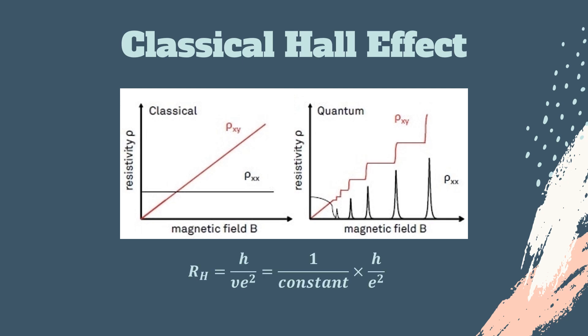The Hall resistance of the quantum Hall effect is H over Ne squared. As you can see here, the Hall resistance is quantized in units of H over E squared and it is inversely proportional to the certain constant.